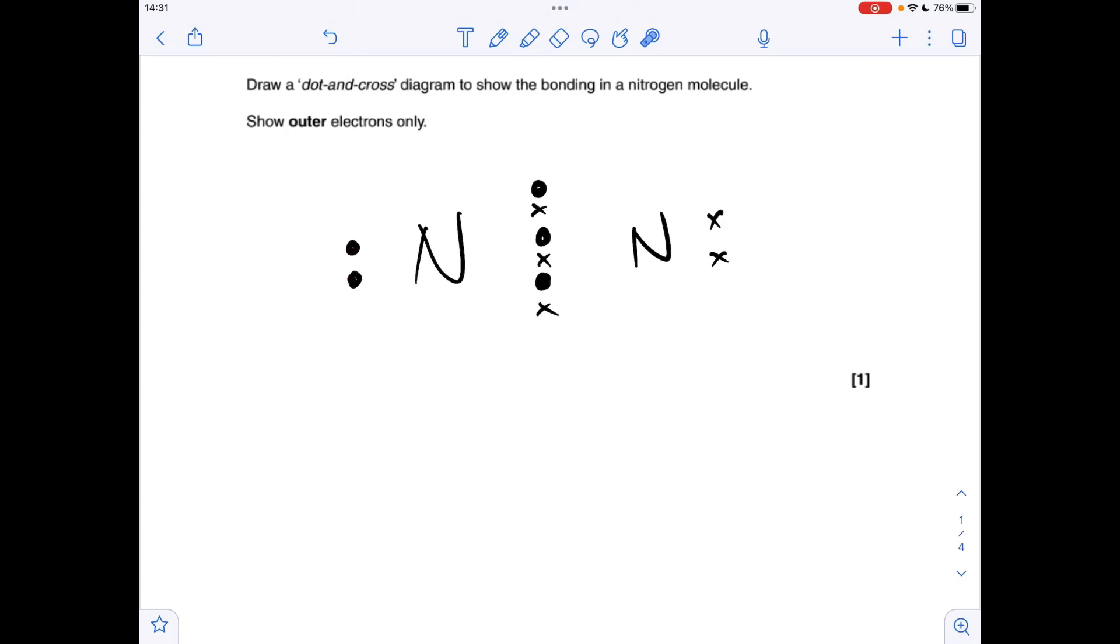I've used shaded circles and crosses. It's a triple bond between the nitrogen atoms, so we need 3 electrons of each type in that shared part, which leaves a lone pair for each nitrogen.